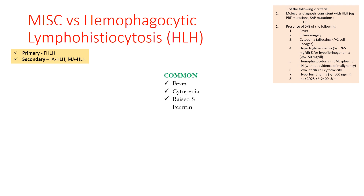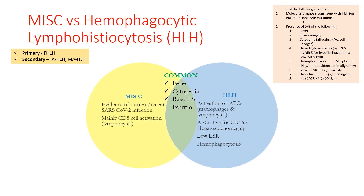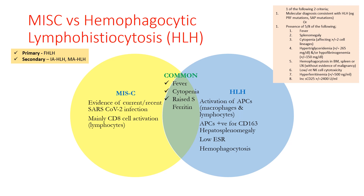Common features between MIS-C and HLH include fever, cytopenias, and raised serum ferritin. Differentiating features: MIS-C will have evidence of SARS-CoV-2 infection, and in MIS-C CD8 cell activation occurs — the main inflammatory agent is lymphocytes. Whereas in HLH, activation of antigen-presenting cells — both macrophages and lymphocytes — occurs; these cells are typically CD163 positive. Hepatosplenomegaly is definite in HLH. Low ESR is a very prominent finding differentiating MIS-C from HLH. Hemophagocytosis on bone marrow biopsy is present in HLH but not required in MIS-C. MIS-C patients usually respond rapidly to anti-inflammatory drugs.